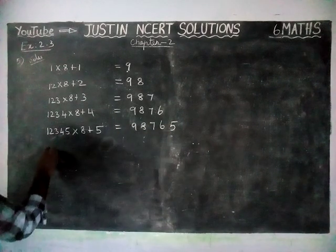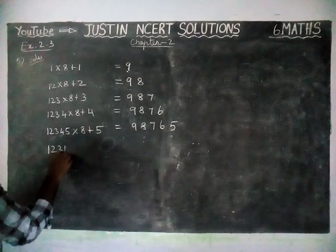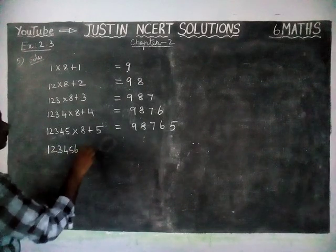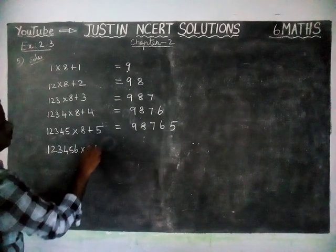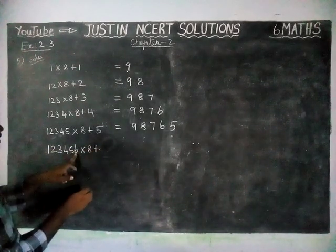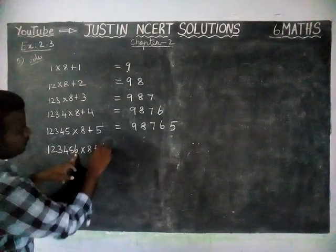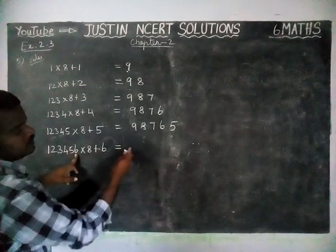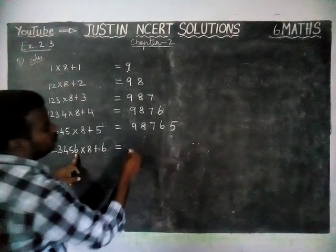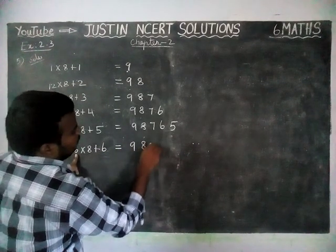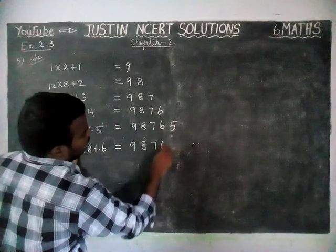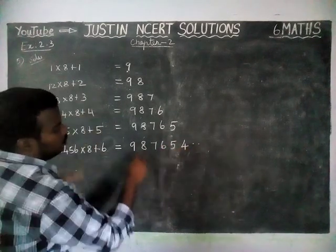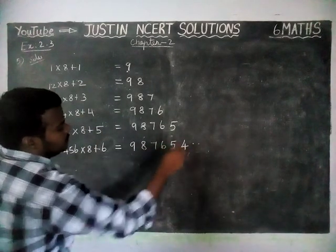So now for the next step: 1, 2, 3, 4, 5, 6 — 123456 into 8 plus 1's digit is 6. We are adding the ones digit 6, so we have to write 6 digits: 9, 8, 7, 6, 5, 4, and then 1, 2, 3, 4, 5, 6.